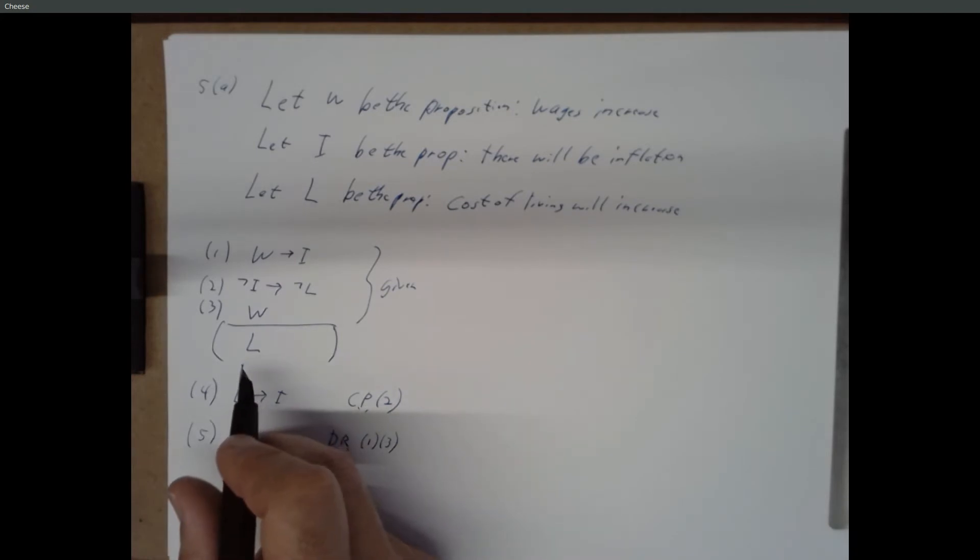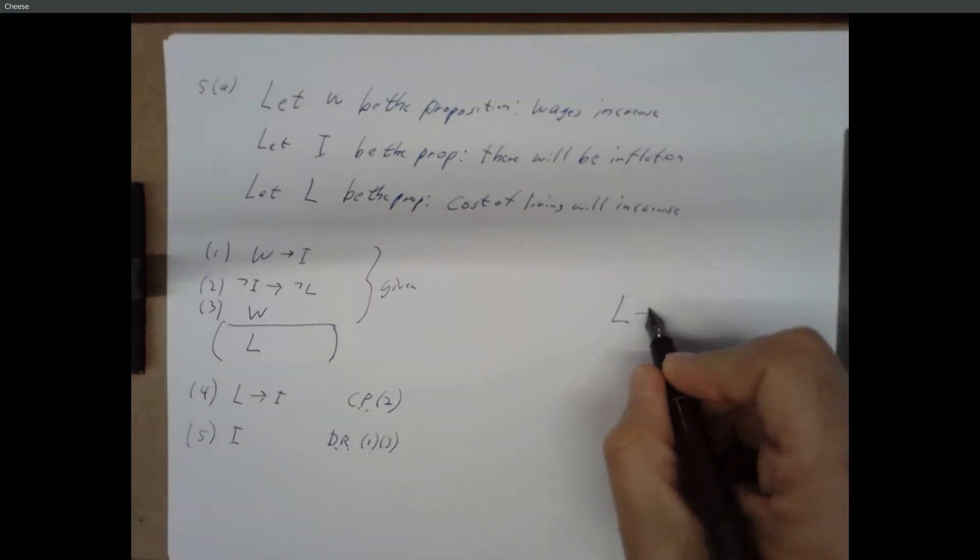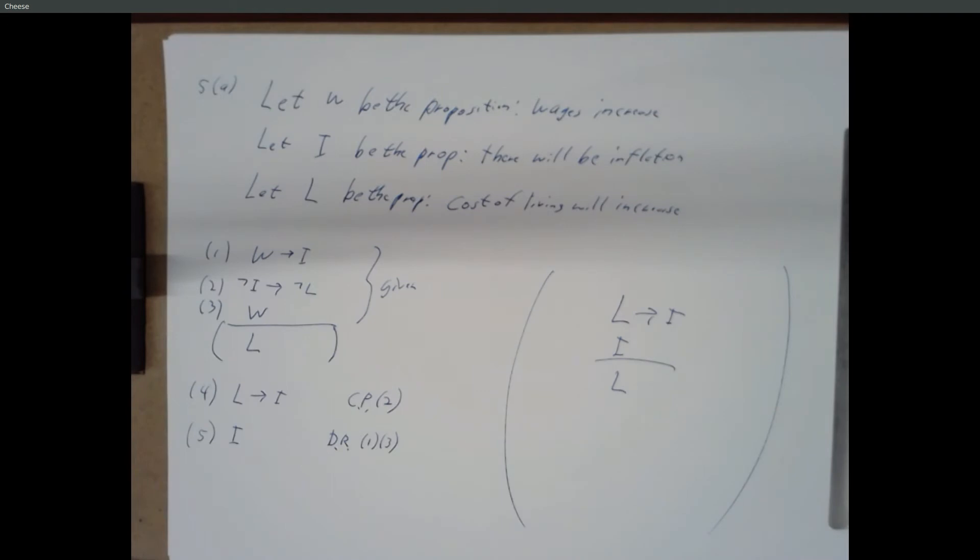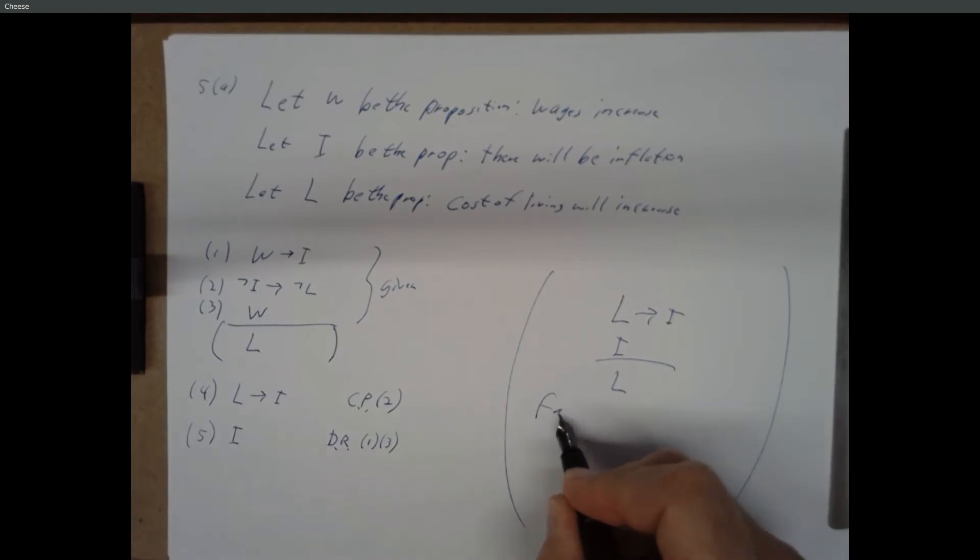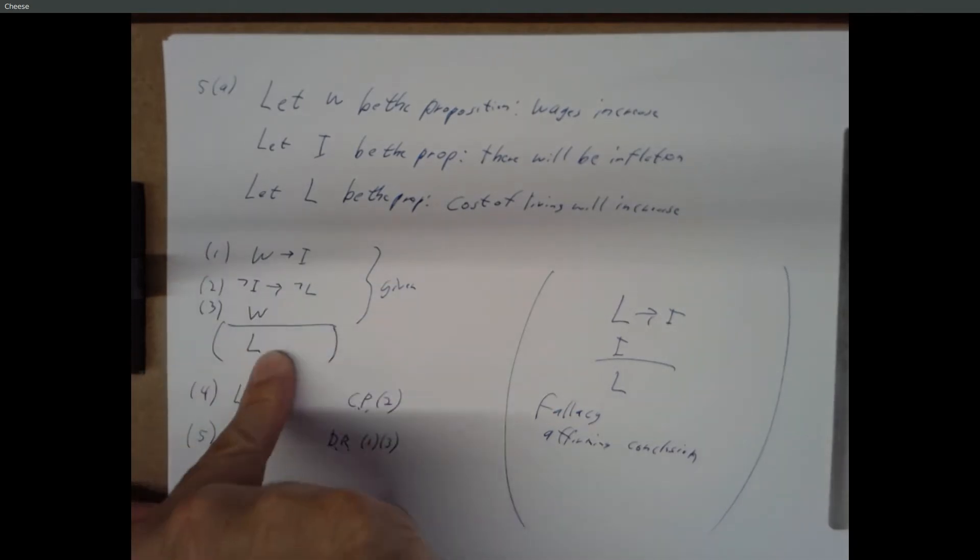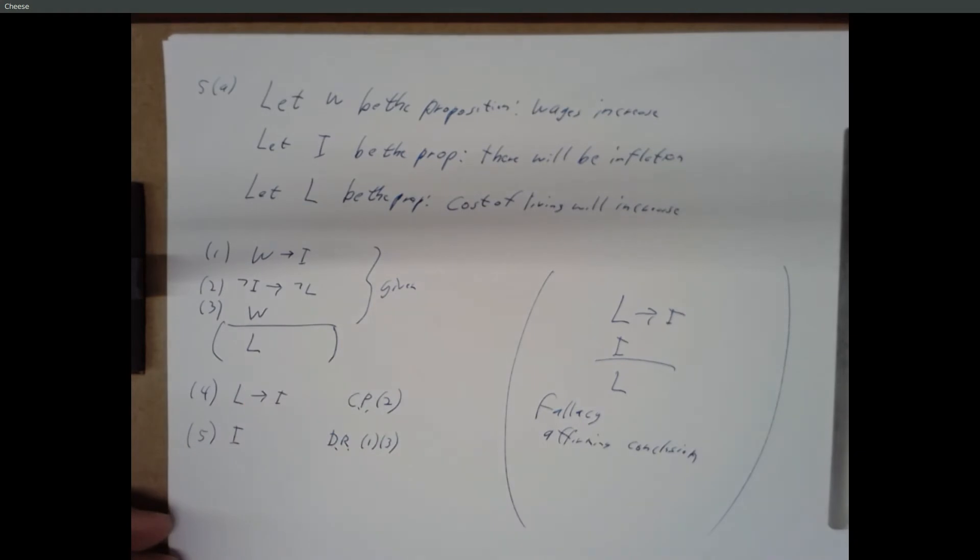So we're told L implies I and we're told I. Does that give us L? There's actually a name for that argument. Remember what this is called? Yeah, this is a good old fallacy. And what we're doing here is affirming the conclusion. So that suggests we could probably find values for these propositions where these first three statements are true, but L is not true. So this turns out to be not a valid argument.